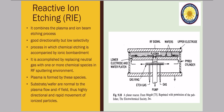Instead of using a neutral gas like argon as in the previous case, we also add another chemical reacting species. Directionality is increased because plasma creates these species. The substrate and wafer are normal to the plasma flow and the RF field, thus highly directional and rapid movement of ionized particles is possible. This diagram is taken from the book 'VLSI Fabrication Principles for Silicon and Gallium Arsenide' written by R.K. Gandhi — you can go through that book.